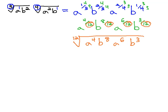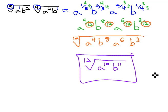And now, we can quickly add our exponents together on a's and b's. Four plus six is a to the tenth, and b, eight plus three is b to the eleventh, and we have multiplied our radicals together to get our product of the twelfth root of a to the tenth, b to the eleventh.